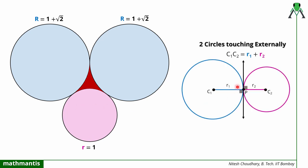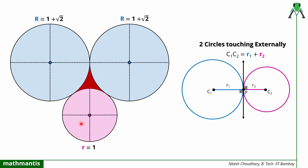If two circles touch each other externally, the distance between the centers of the circles equals the sum of their radii. So what we will do is draw a line joining the centers of these circles. The center of each circle is defined, and the line joining the centers is already drawn. For every case of circles touching each other externally, you always have to draw the line joining the centers of the two circles.